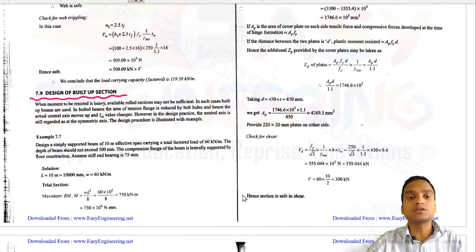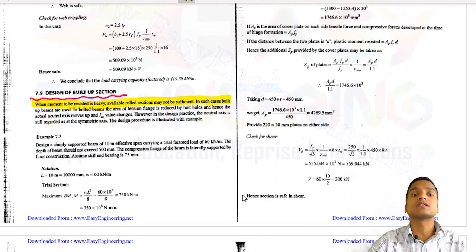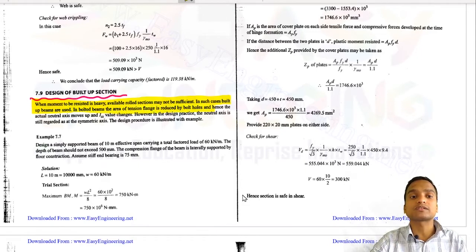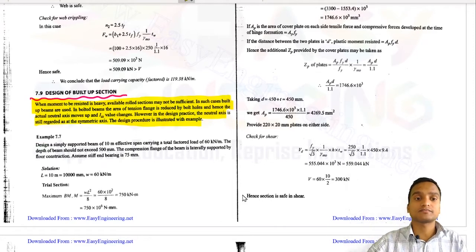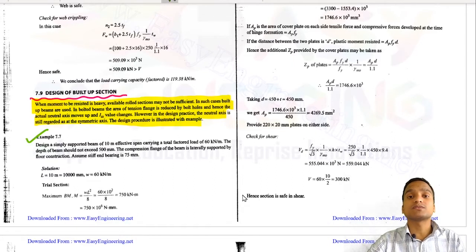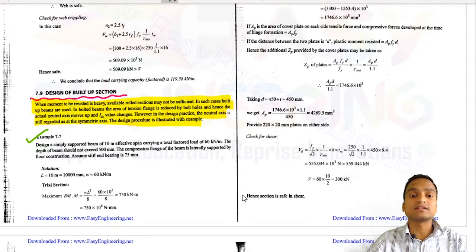Built-up beams are used when the moment to be resisted is very heavy and available rolled sections may not be sufficient. In bolted beams, the area of the tension flange is reduced by bolt holes, hence the actual neutral axis moves up and the I_zz value changes. However, in design practice the neutral axis is still regarded as the symmetry axis, and we also add cover plates at the flanges.